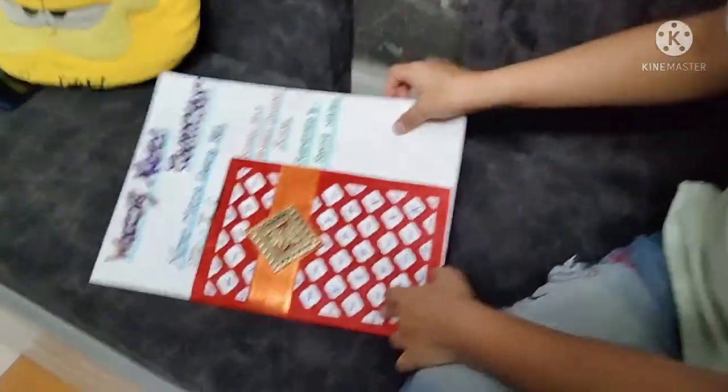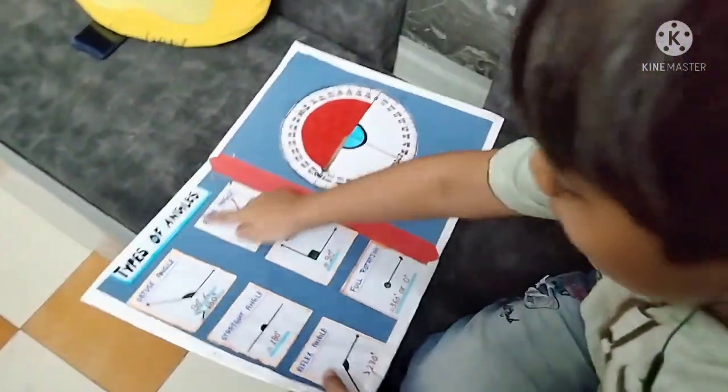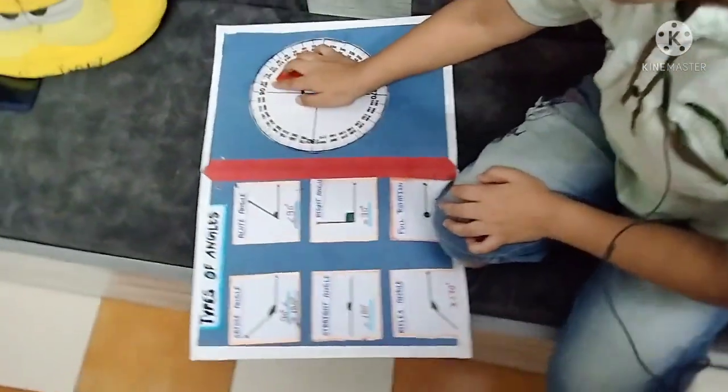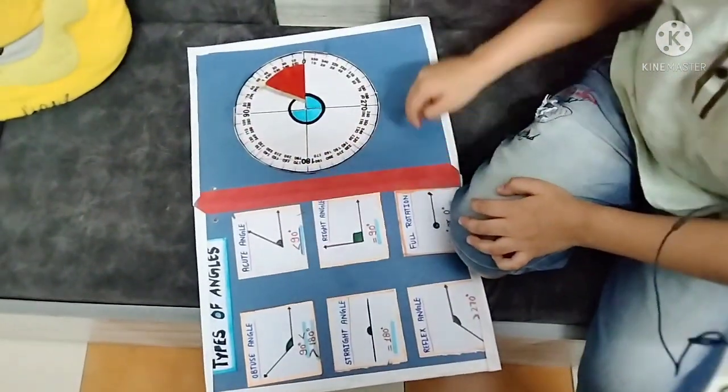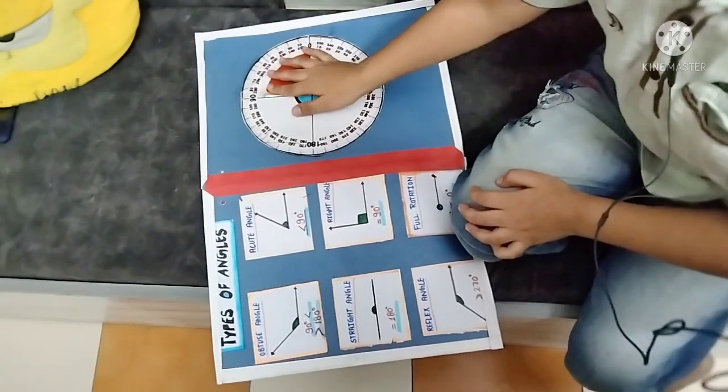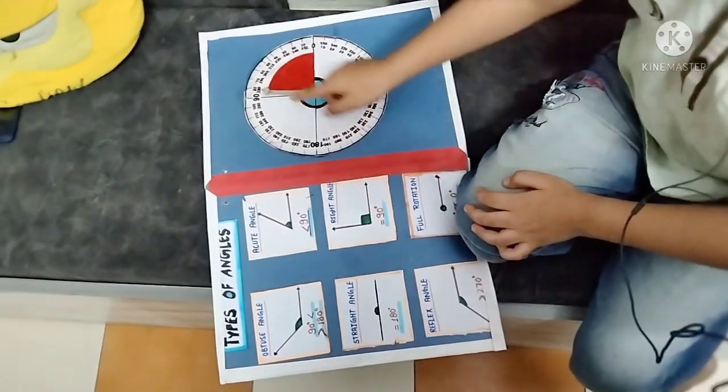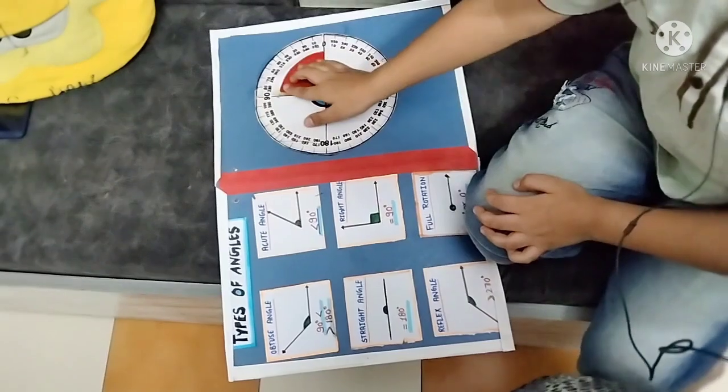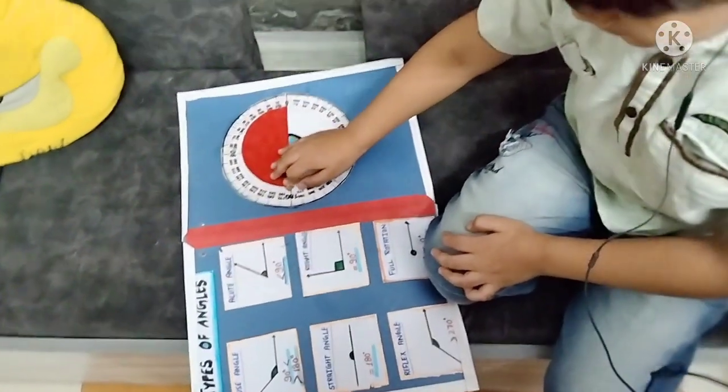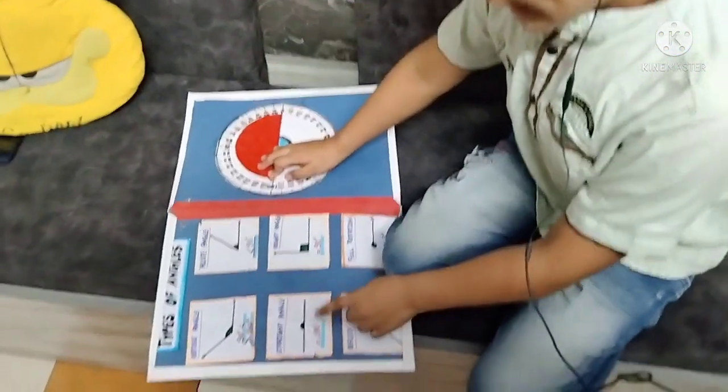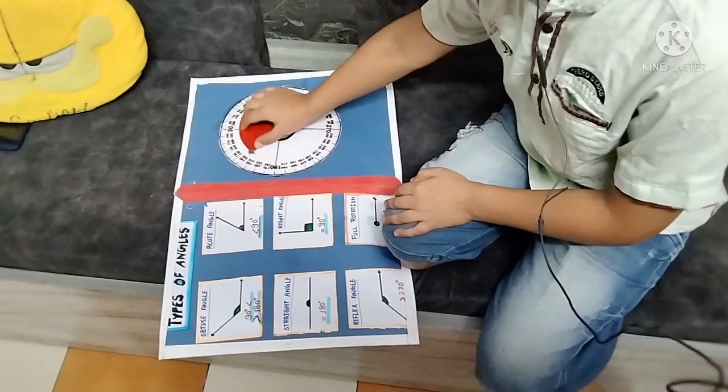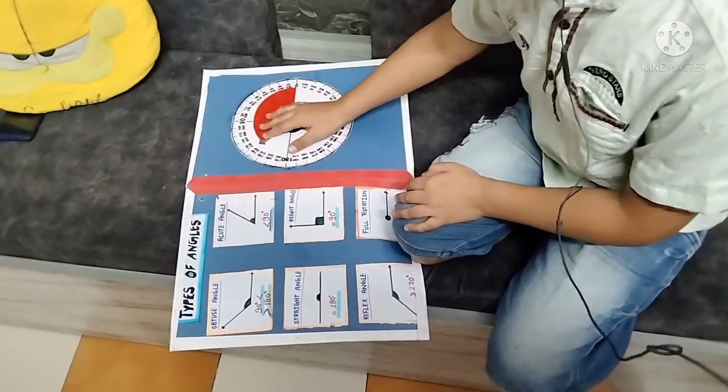So let's start with the types of angles. An angle less than 90 degrees is called an acute angle. An angle equal to 90 degrees is called a right angle. An angle equal to 180 degrees is called a straight angle. An angle greater than 90 degrees and less than 180 degrees is called an obtuse angle.